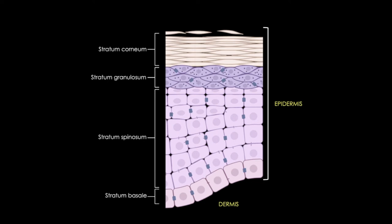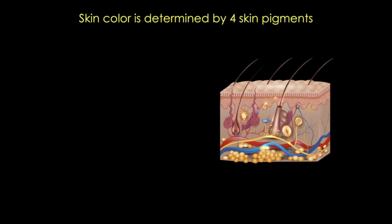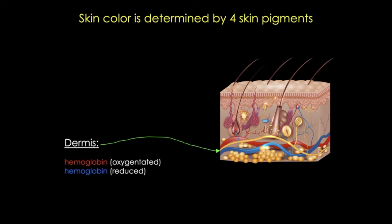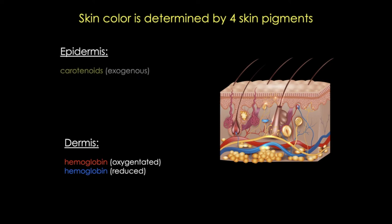It turns out that there are four pigments that determine color. In the dermis, we have both oxygenated and reduced hemoglobin, which contribute to color. In the epidermis, we have exogenous carotenoids from fruits and vegetables, which can also contribute. But it's mainly melanin that is the major driver of skin color.